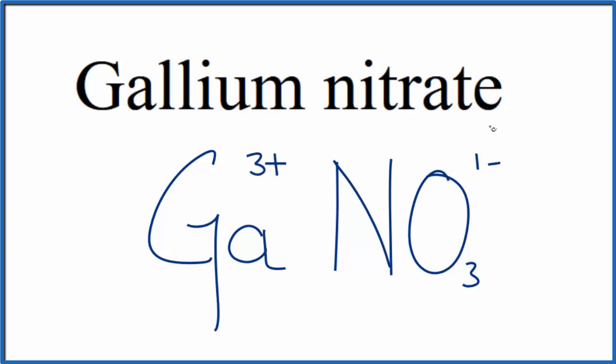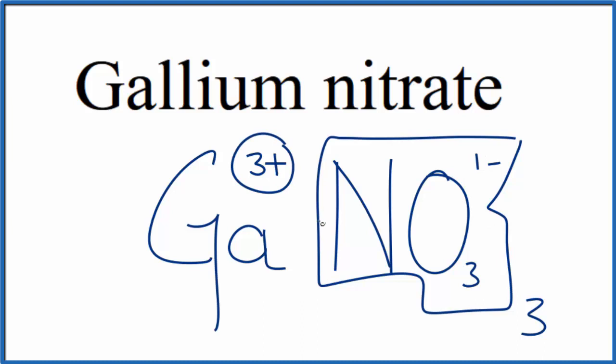So we have our gallium, and then we have our nitrate ion. The 1 minus applies to the whole nitrate ion here. So if we had 3 of those, 3 times 1 minus, that would give us 3 minus, that would balance out the 3 plus.